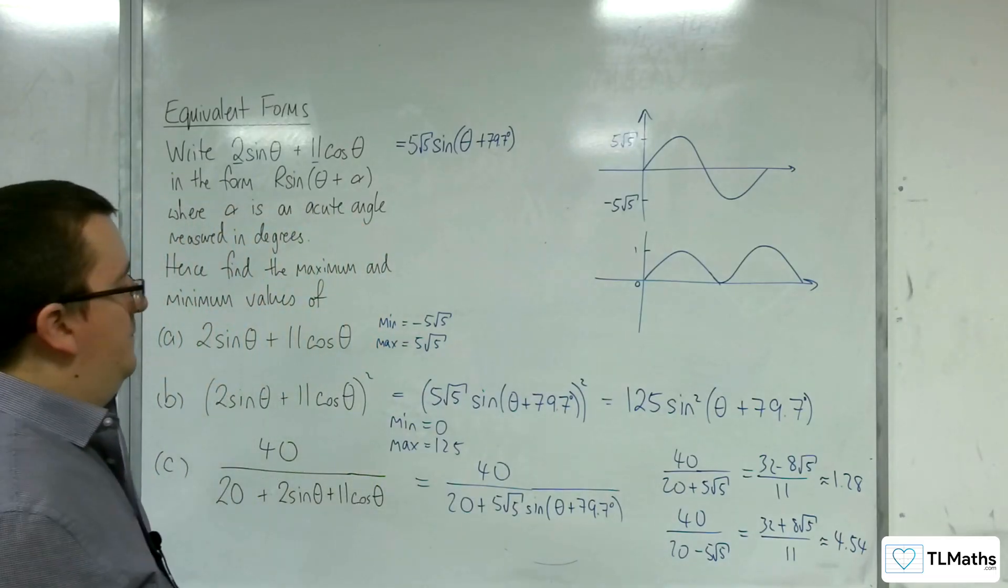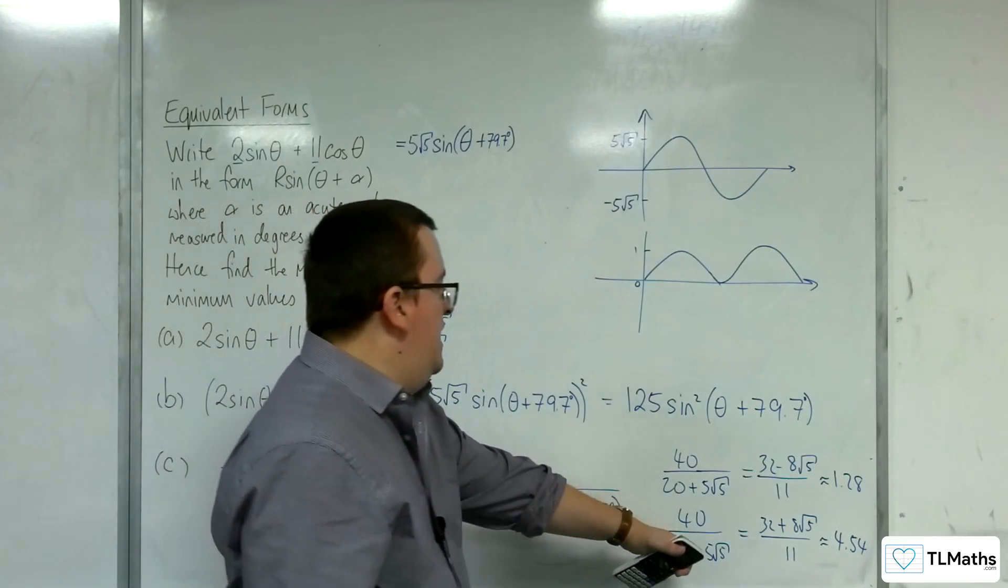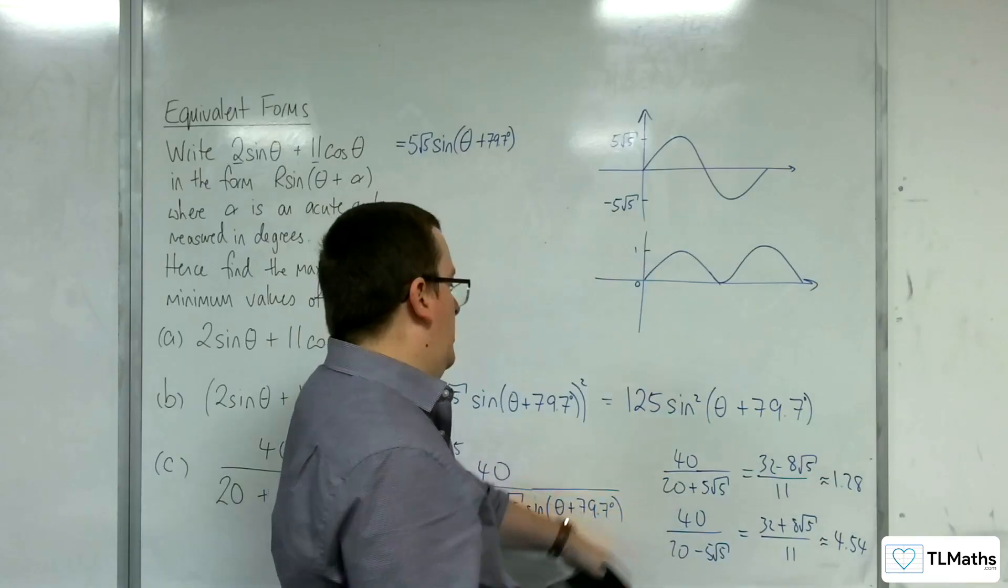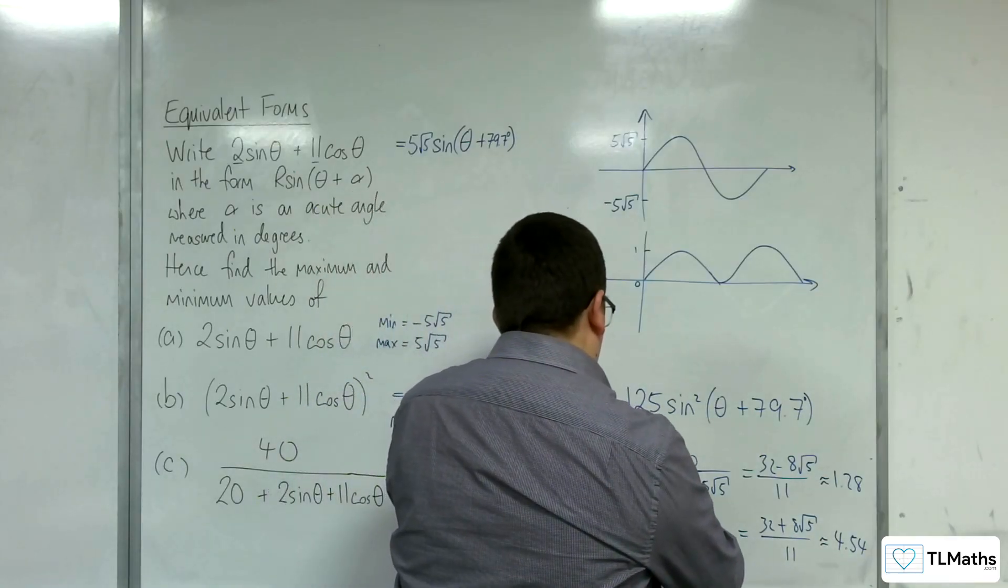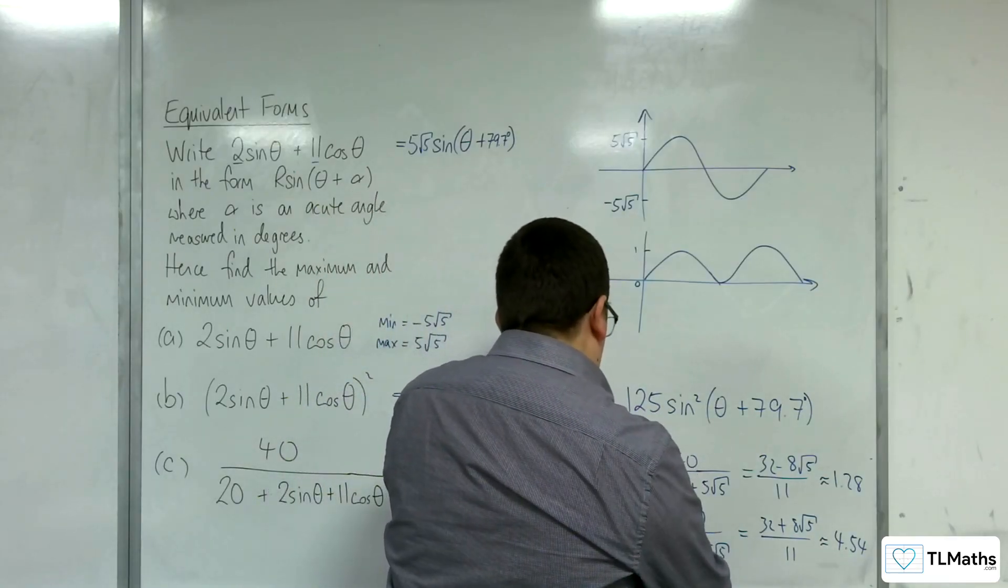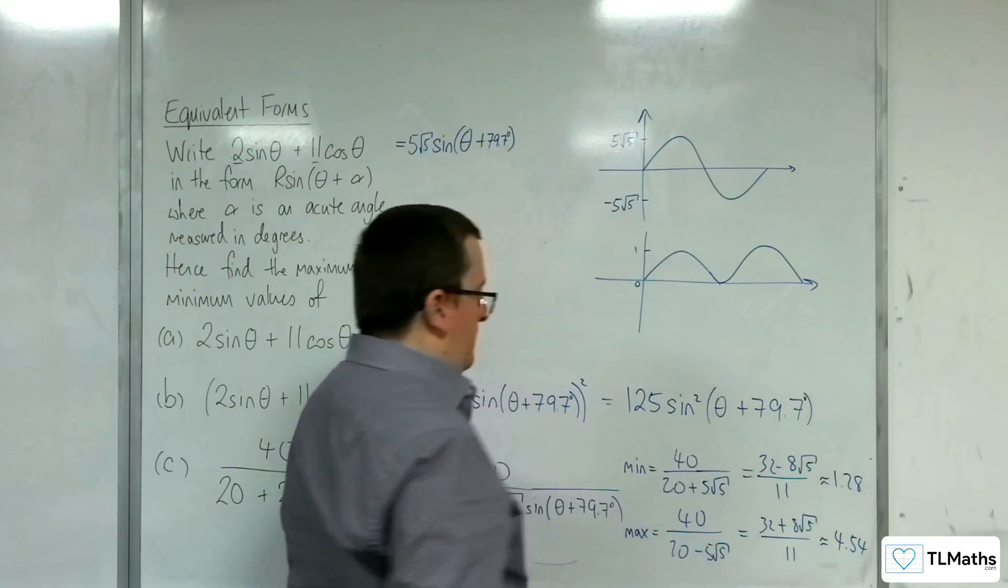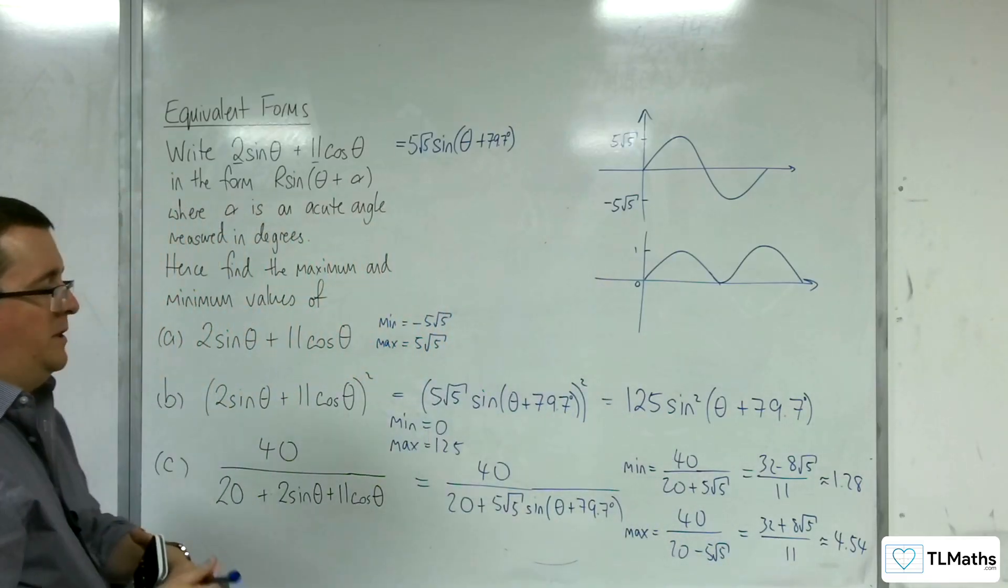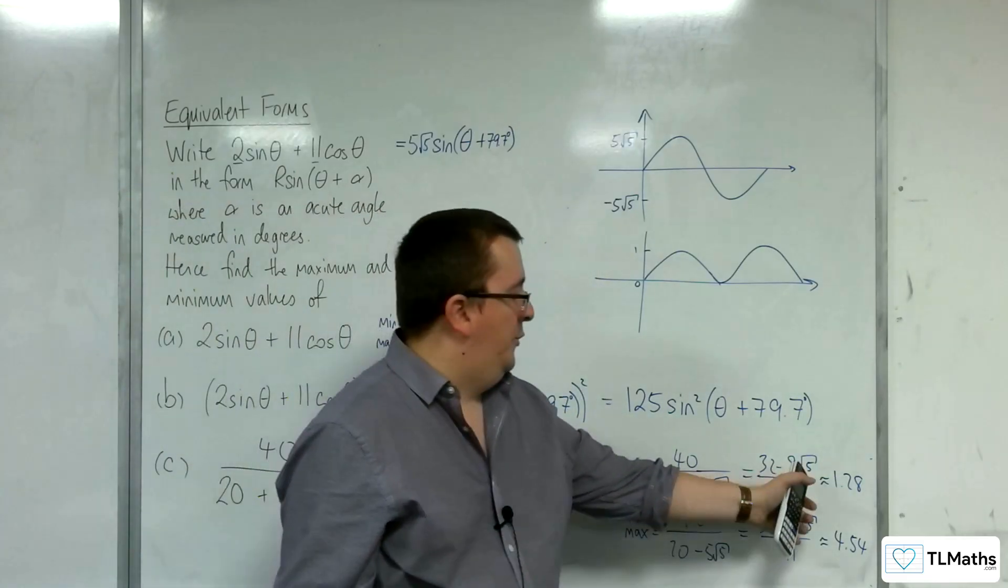So, what you're seeing here is that the minimum value is actually this one. And the maximum value is actually this one. The curve is bounded between these two values.